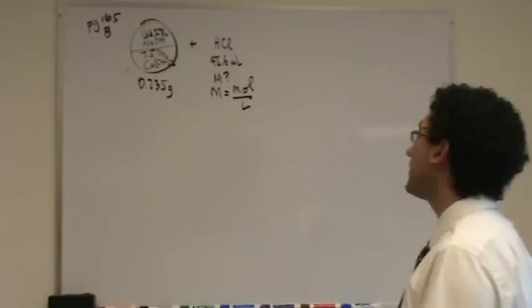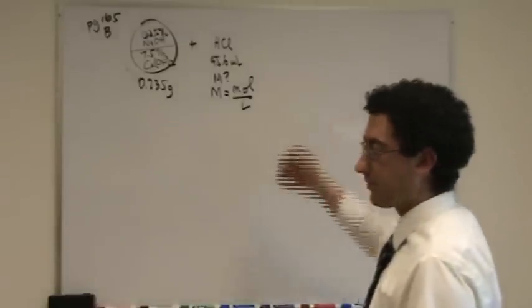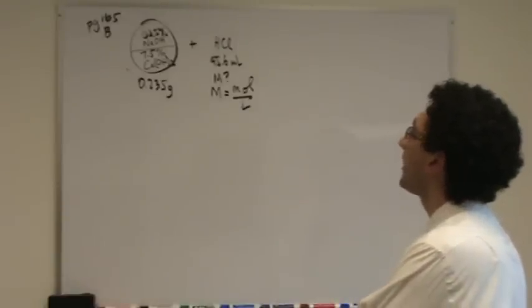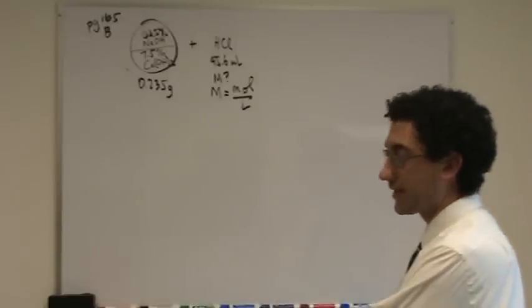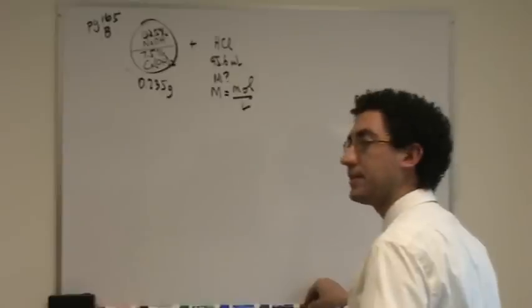We'll need moles. Once we have moles, we already have the volume, so we'll just go from there. The hard part about this problem is that we'll need to find the amount of hydroxide in this. So how do we do this?